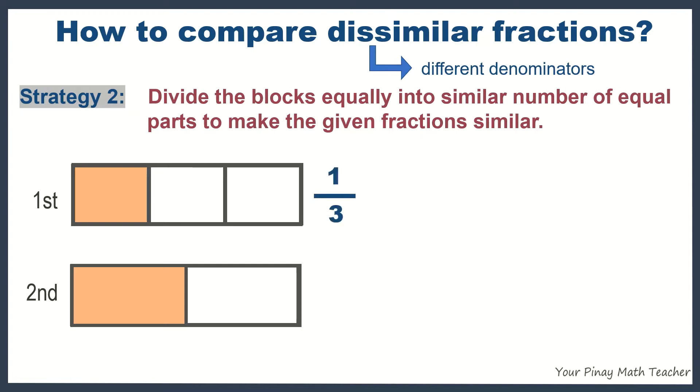In the first figure, the shaded part is one-third and in the second, it's one-half. Let us divide the two figures in such a way that they will have the same number of equal parts. How will we do it?